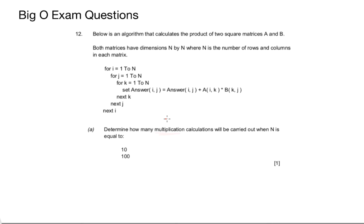Hello and welcome to the second video on Big O Notation. In this video we're going to look at a few different exam questions from 2016 and 2017 papers. In this first question we're given an algorithm that calculates the product of two square matrices A and B. Both matrices have dimensions N by N where N is the number of rows and columns in each matrix.